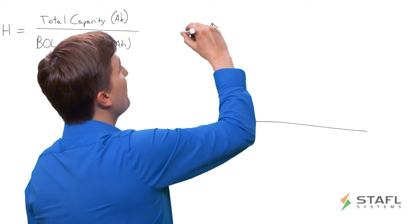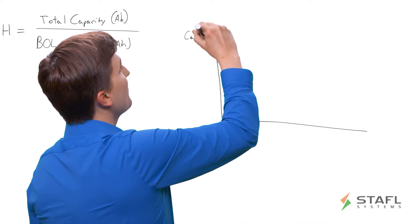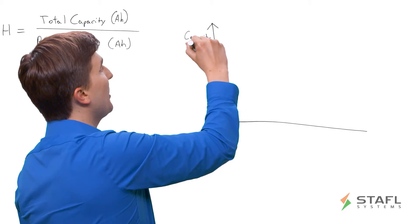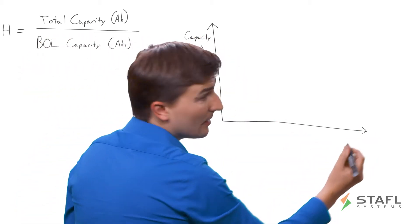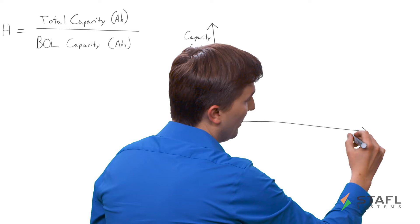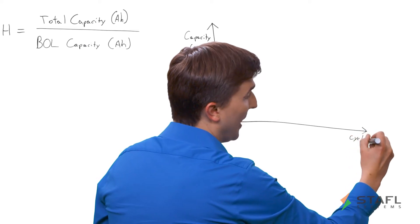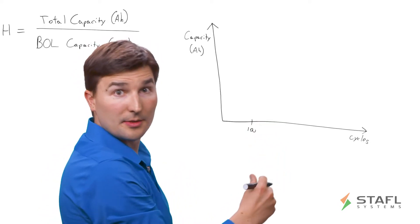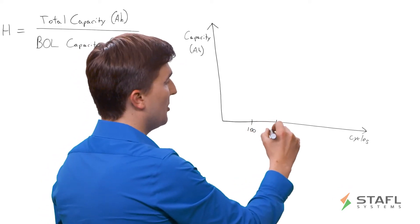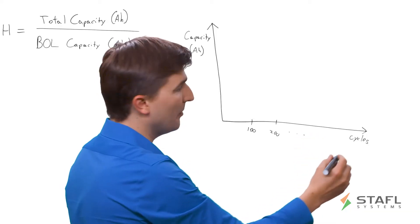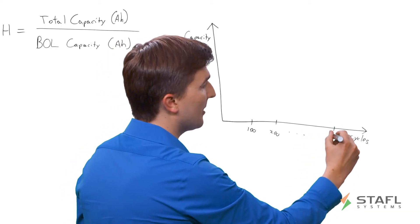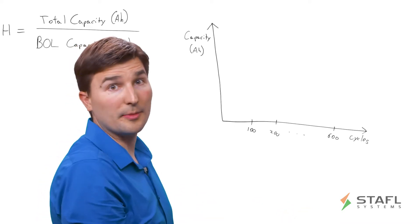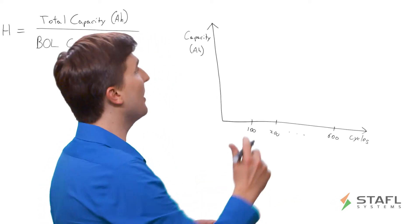So over here on the Y axis, I'm going to describe capacity again in units of amp hours. And then in the X axis, we're going to use cycle life or just battery cycles rather. So, for example, say this is 100 cycles, charge discharge cycles. This is 200, et cetera, maybe up to 600 cycles in this particular system. Some battery packs have longer cycle life, other battery packs have less cycle life.